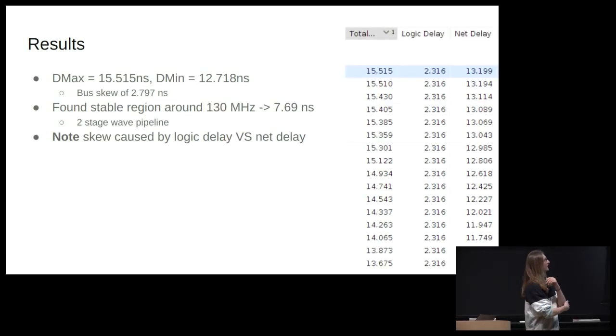So my results: the max path was 15.5 nanoseconds, the minimum 12.7. And that's a bus skew of around 2.7. And I was able to find a stable region around 130 megahertz where I was able to get good data and run things through my multiplier, which makes this a two-stage wave pipeline. So somewhat predictably, the logic delay is obviously balanced because I was very careful to make sure that the same amount of LUTs were used on every path. But the FPGA tax is having interconnects and there's that delay. So my net delay is what's causing the skew here. And I didn't do any manual routing. What I did is I used RPM constraints to place everything and then I said Vovato go.